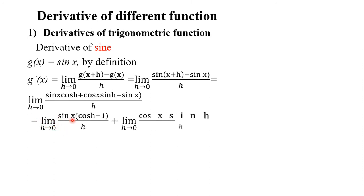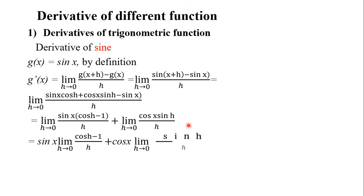This simplifies to the limit of sin x times (cos h minus 1) over h as h approaches 0, plus the limit of cos x times sin h over h as h approaches 0. Since the limit of (cos h - 1)/h = 0 and the limit of sin h/h = 1, the result is cos x. So the derivative of sin x is cos x.